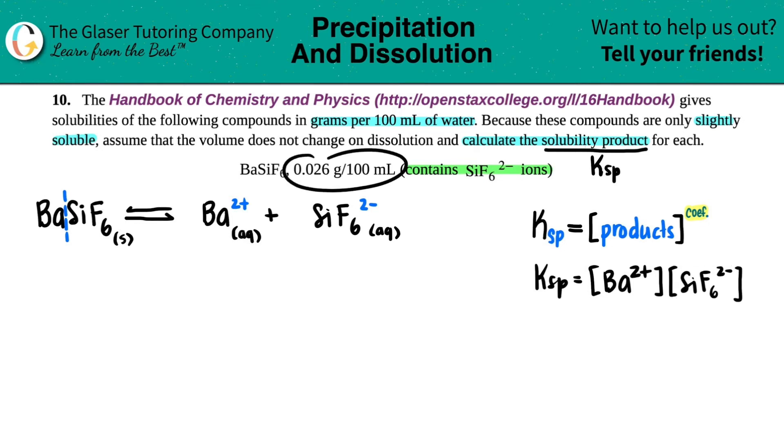The only number that they gave us was that it was 0.026 grams per 100 mils. Remember, if we have brackets, that's molarity. Molarity is a very specific unit. Molarity is the unit mole per liter. They gave us gram per mil, so we have to do some conversions here.